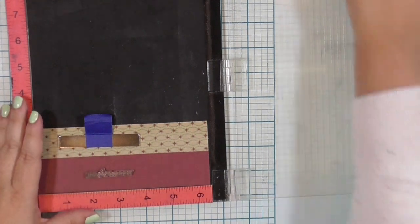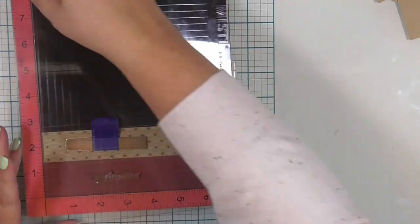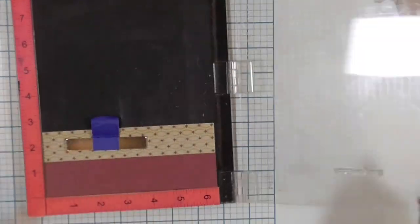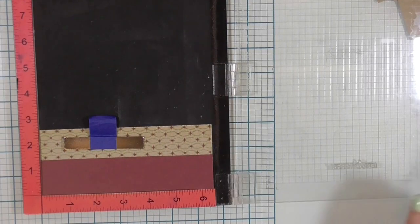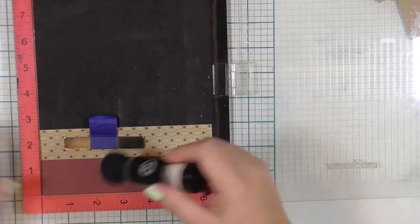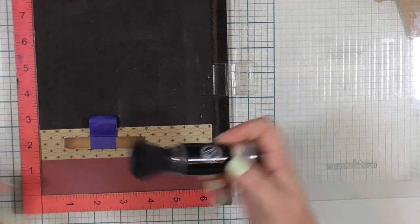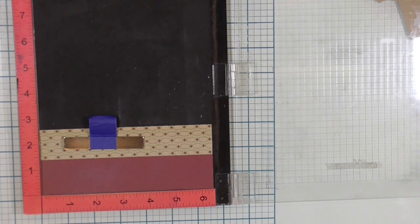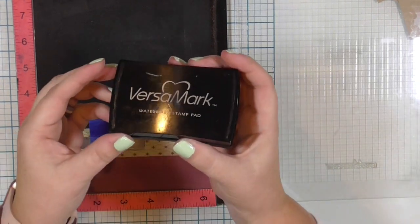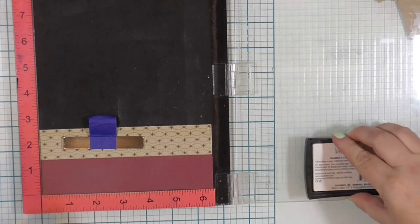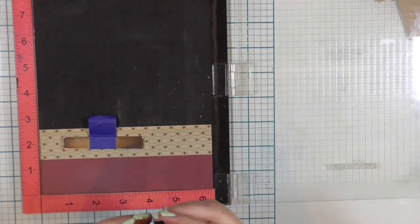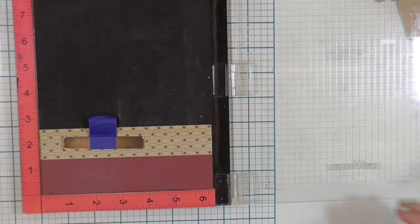So I'm just going to go ahead and put that into my MISTI so I can stamp it again if I don't get a very good stamp the first time out. Also going to prepare my paper, well that's a tongue twister, with the anti-static powder tool. Anti-static powder tool, probably the best thing you can invest in if you are going to invest in heat embossing.